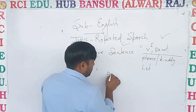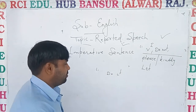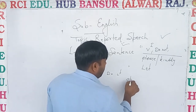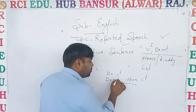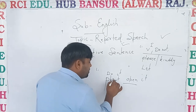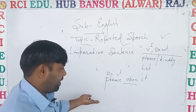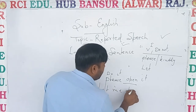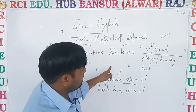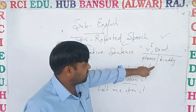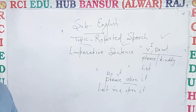For example: 'Do it' — first form, imperative. 'Open it' — first form, imperative. 'Don't open it' or 'Do not open it' — imperative. 'Please open it' — imperative. 'Let me open it' — imperative. So, dear students, if any sentence starts with the first form, 'do not', 'please', 'kindly', or 'let', then it will be imperative.